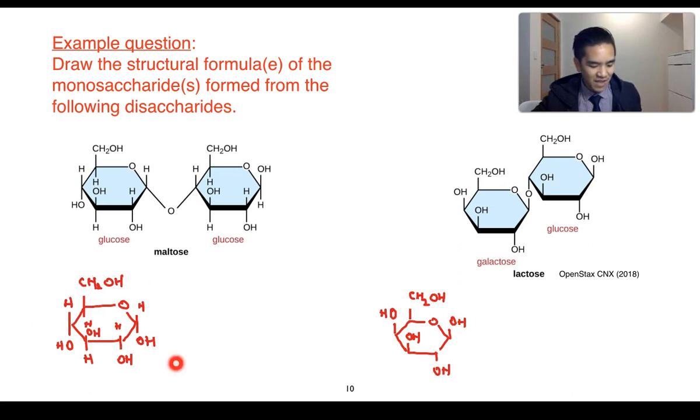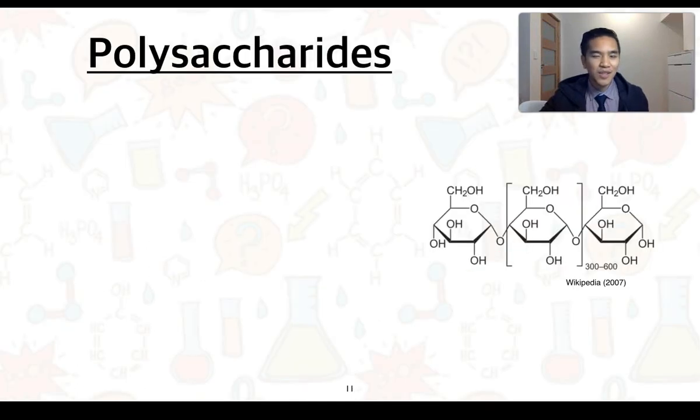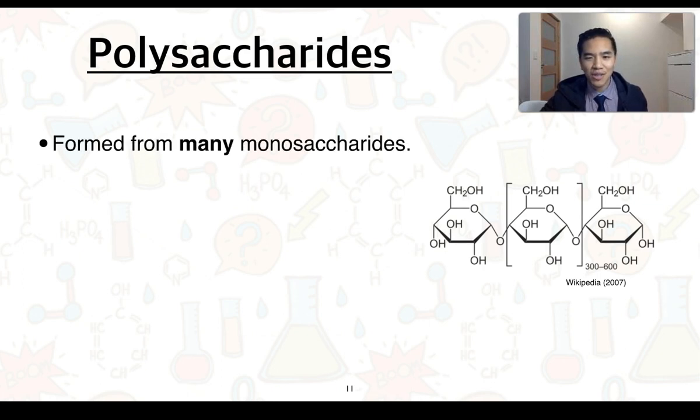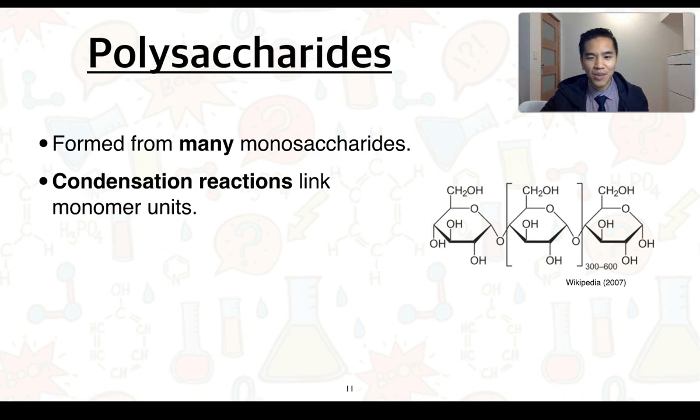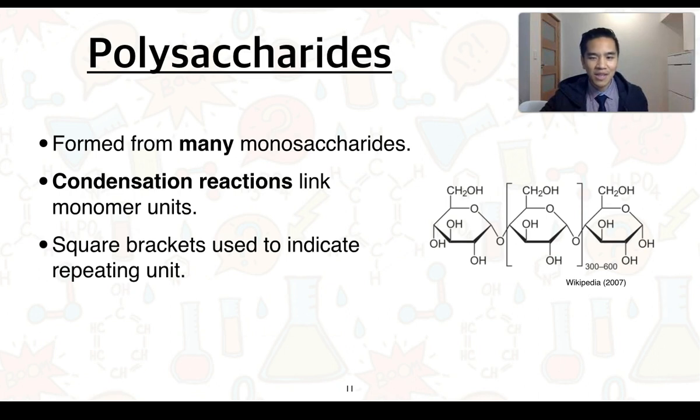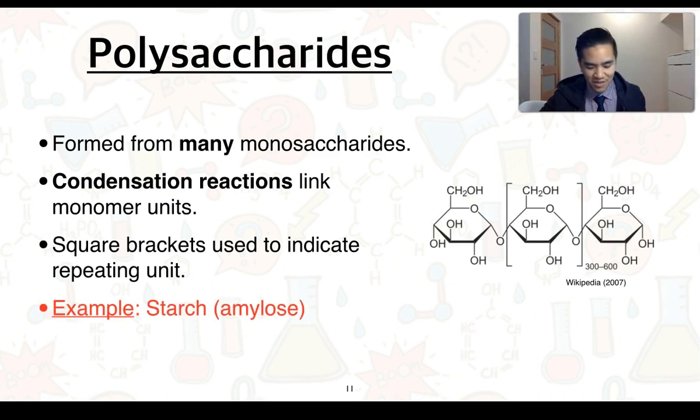Our third type of carbohydrate is called a polysaccharide. Polysaccharides are formed from many monosaccharide units joined together through condensation reactions. Over to my right, we've got an example of a polysaccharide. And you can see with the square brackets, this is often used to indicate the repeating units within a polymer. Normally, we have the symbol N down the bottom right to indicate that this repeating unit can occur N number of times. But in this case, with our example, which is of starch, we can see that this repeating unit typically ranges from 300 to 600 repeating units.